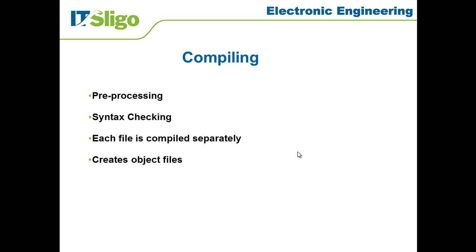There can be references in one C file to something that goes on in another C file or somewhere else — for example, the printf function, which you don't actually implement yourself. You could also have written several C files yourself, and one refers to a function or variable in the other. As part of the compile process, it checks whether within your C file you've operated that correctly — have you named it correctly, have you said that variable exists in the current C file or another, and for functions, have you made reference through a header file? It doesn't take the implementation because that's done in a separately compiled file.